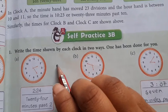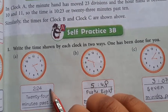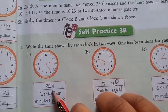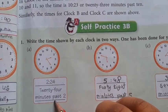How many hours is this? 2 hours 24 minutes. How many hours is this? 2 hours 24. How many hours is this? 24 minutes past 2.